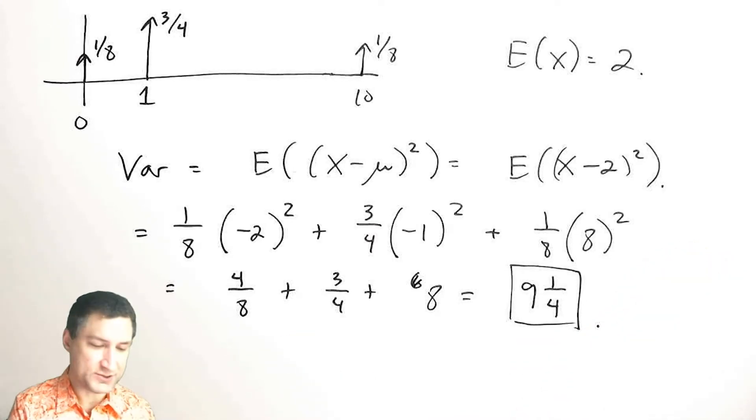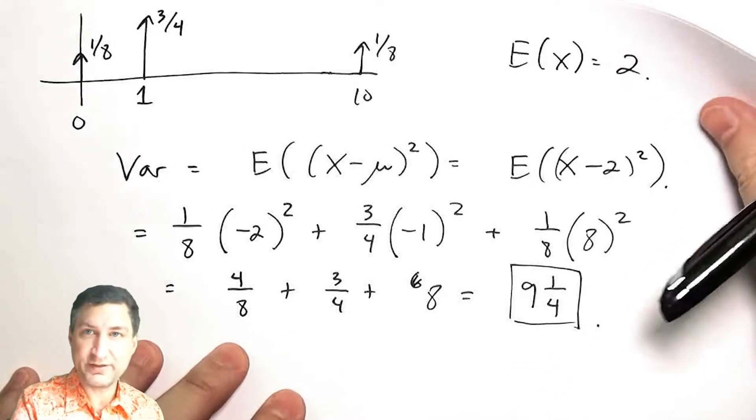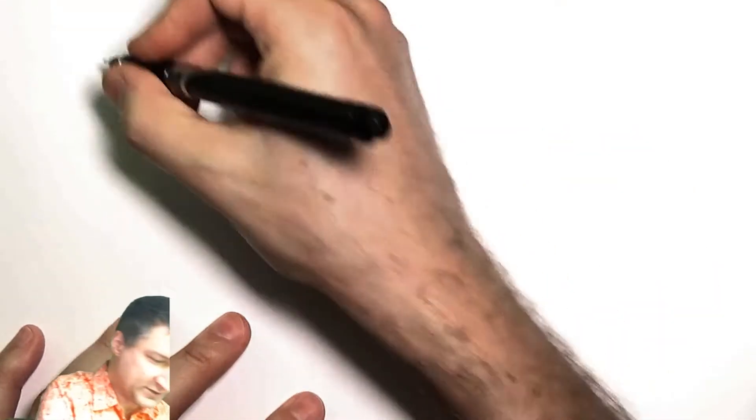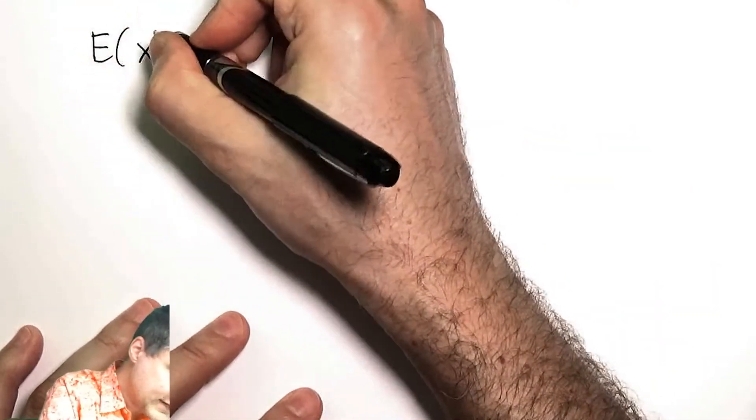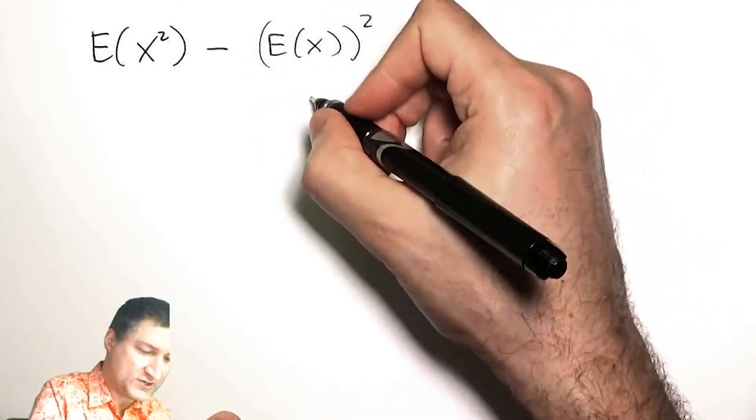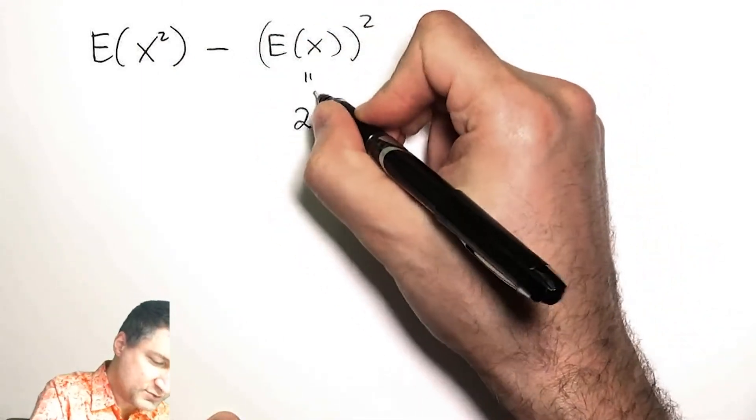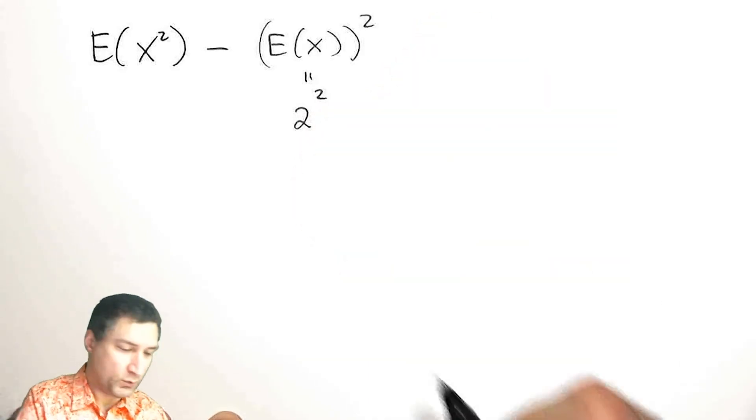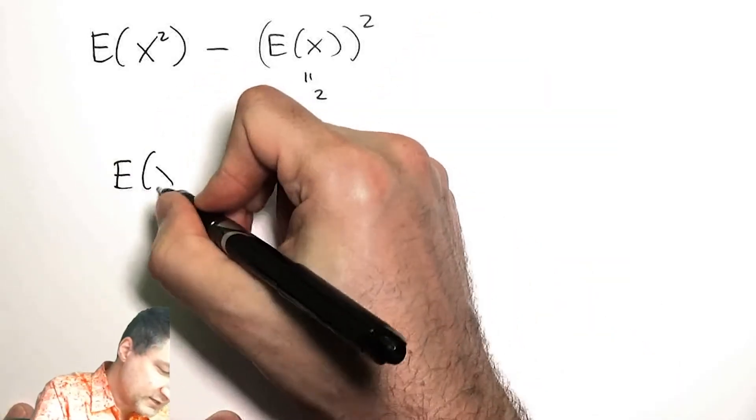So that's pretty easy to compute directly. Or I could compute it with the version like this. I could say what's the expected value of X squared minus the expected value of X all squared. I already know that this is 2 squared.